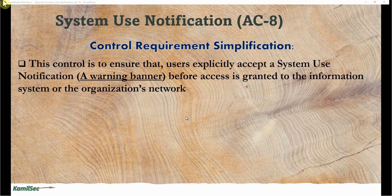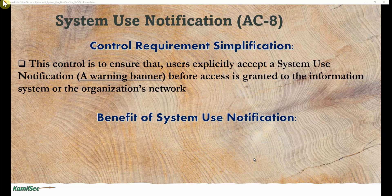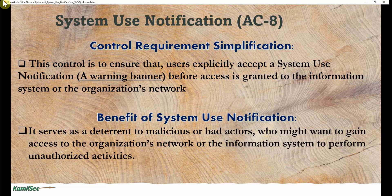This control is designed to ensure that users explicitly accept a system use notification — that is, a warning banner — before access is granted to the information system or the organization's network. One of the key benefits of system use notification is that it serves as a deterrent to malicious or bad actors who might want to gain unauthorized access to the organization's network or information system.